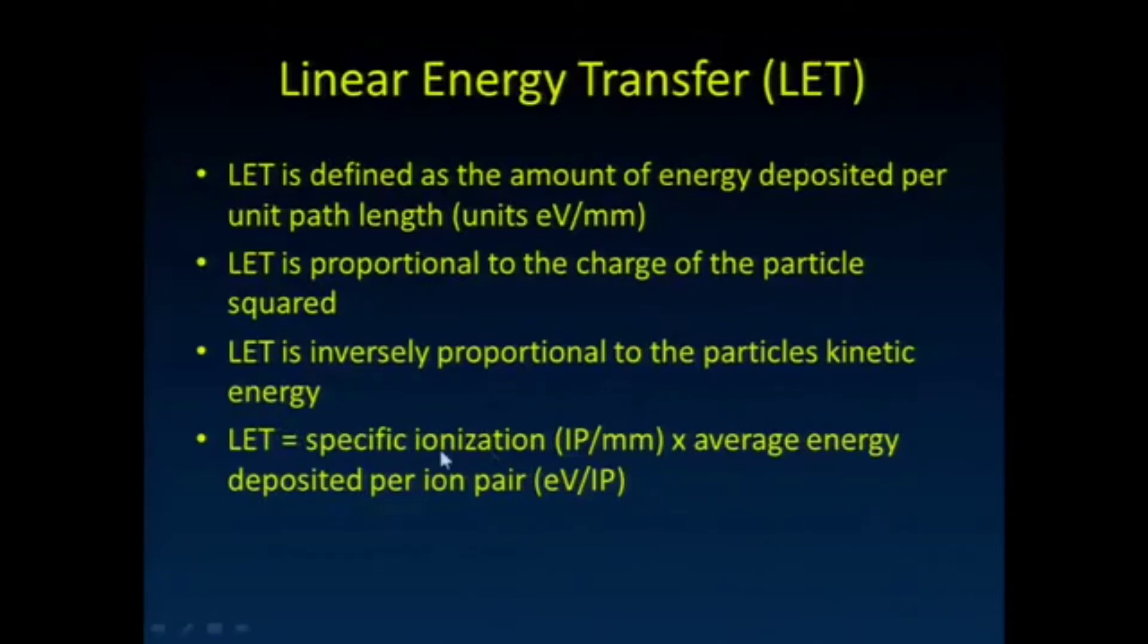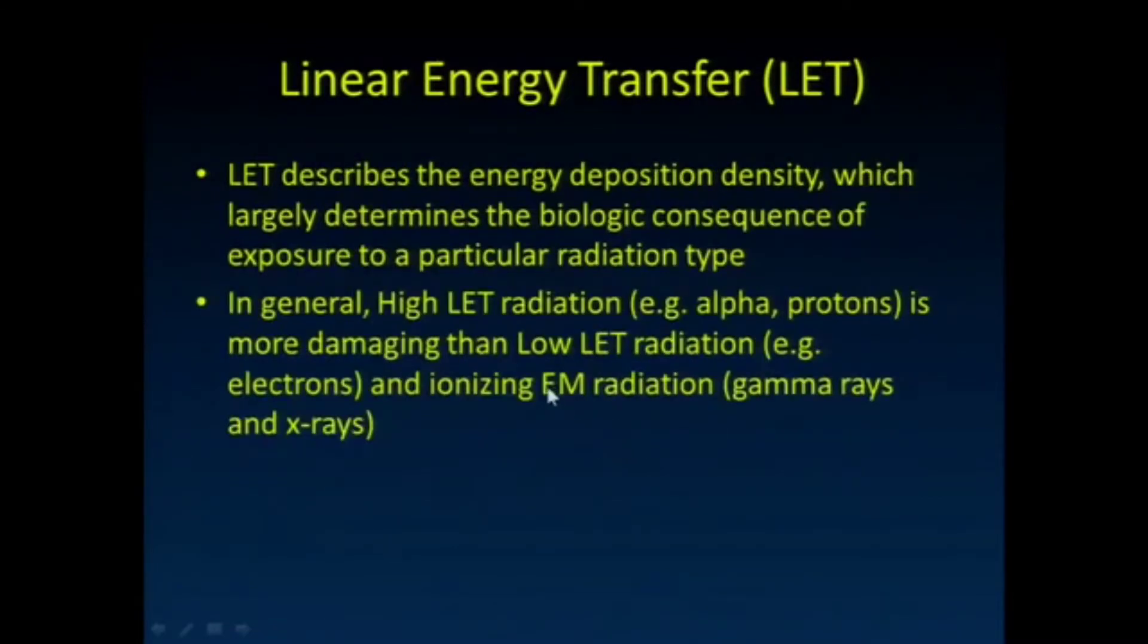LET is calculated by the specific ionization pairs per millimeter times the average energy deposited per ion pair. So you end up with electron volts deposited per millimeter of tissue traveled. This is what really largely determines the biologic effect of radiation.